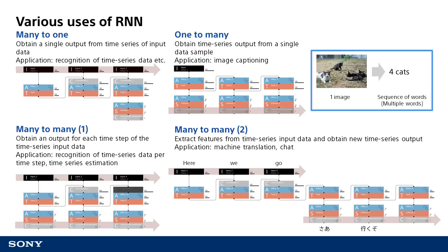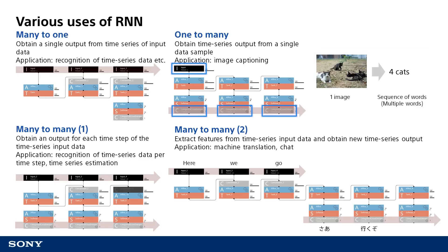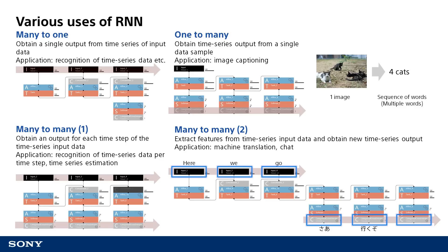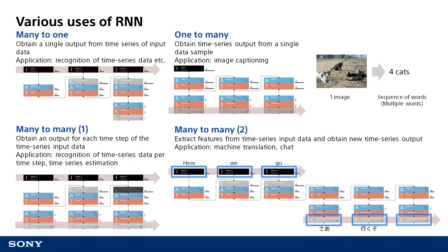Captions are text consisting of multiple words that describe the image, so it involves outputting a word sequence. We can use the one-to-many pattern to achieve this processing. We also have many-to-many patterns in which both the input and output are time series data, but the input and output timings are not necessarily related. An example of this pattern would be a machine translation system. When translating from one language to another, especially ones with significantly different basic sentence structures such as English into Japanese, both the placement of words and the actual number of words will be different. Features can be extracted from a sentence of input which are then used to produce time series data as the output.